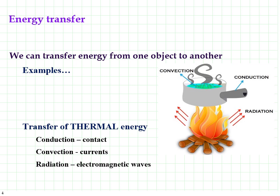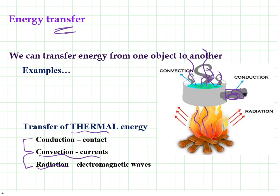We can neither create nor destroy energy, but we can transfer energy from one object to another. Some examples are conduction, convection, and radiation, which are transfers of thermal energy. Conduction is the transfer through contact — if I put my hand on a hot pot, heat will be conducted from the pot to my hand. Convection involves currents — heat heats up the air, that hot air rises. Radiation is those heat waves, that infrared radiation transferring heat from one object to another.